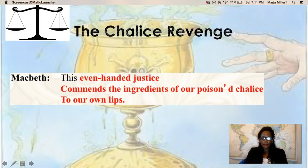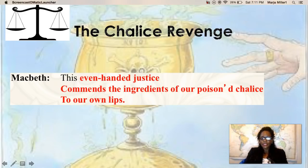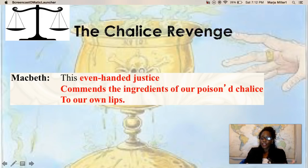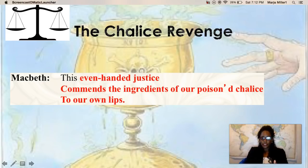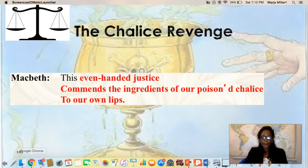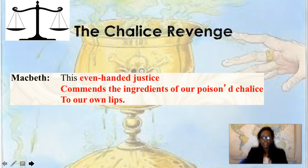The next example I call the 'chalice revenge.' Macbeth is contemplating whether to go through with murdering King Duncan. He says: 'Even-handed justice commends the ingredients of our poisoned chalice to our own lips.' The metaphor of the poison chalice captures his awareness that whatever he does to King Duncan, justice being fair, it will come back to him. This evil will catch up with him — he acknowledges he will not get away with it.